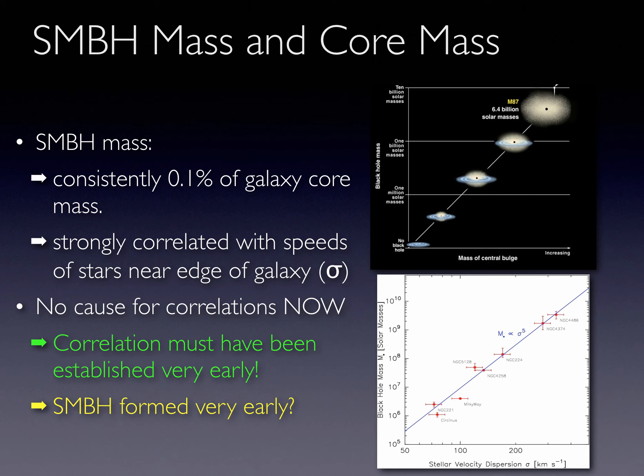This correlation suggests that the bulge masses and outer star speeds were strongly influenced by the black hole masses in the distant past. This means that these black holes have been there since the beginning, and it may even be that these black holes played an important role in the formation of their host galaxies. An even stronger correlation has been discovered between the black hole mass and the dark matter halo inside which a galaxy is embedded.